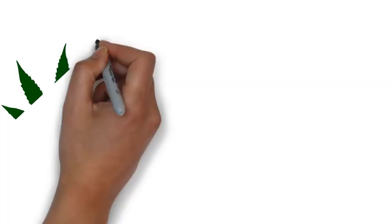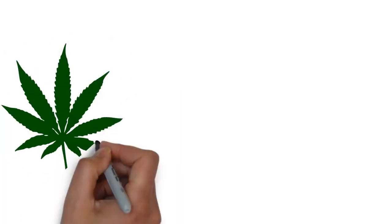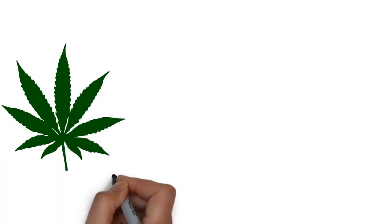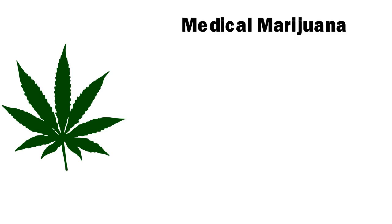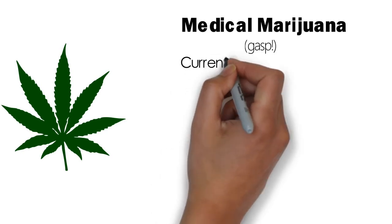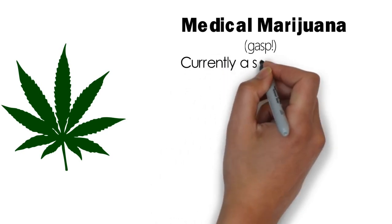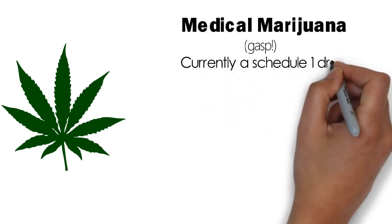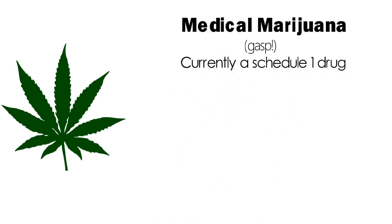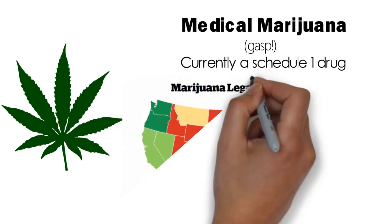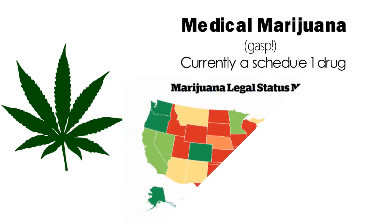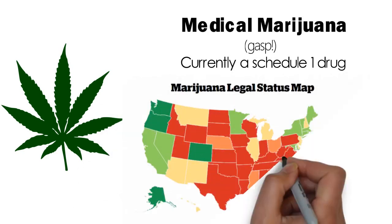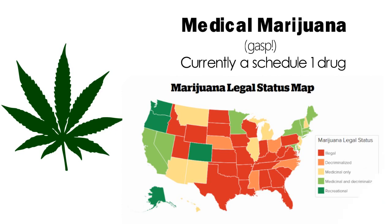Let's discuss an example of deviance that is not so clear in society: medical marijuana. For decades, marijuana has been listed as a Schedule 1 drug, which means that it is just as dangerous as heroin or ecstasy. So for the longest time, medical marijuana was not even something to consider in treating certain illnesses.